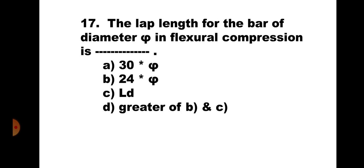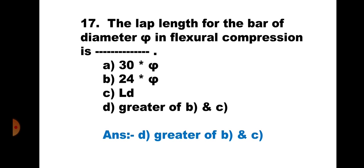Question 17. The lap length for a bar of diameter phi in flexural compression is: A. 30φ, B. 24φ, C. LD, and D. Greater of B and C. For flexural compression, the lap length should be 24φ or LD, whichever is greater. Hence, the correct answer is D. Greater of B and C.